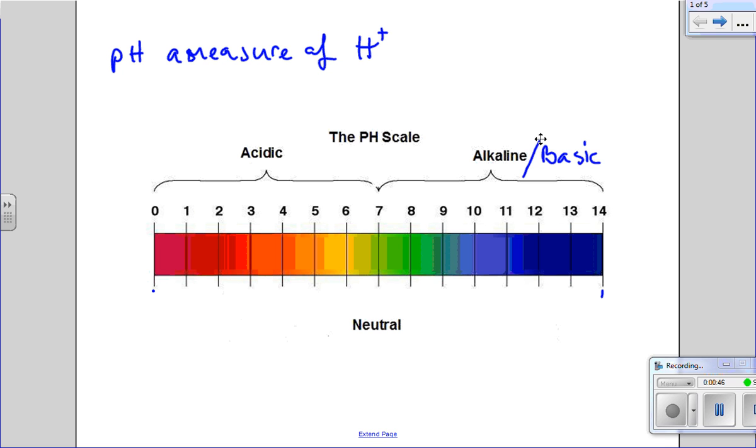Now, pH of less than 7 is what we call acidic. A pH, you can see though, that's pretty much everything under here, of greater than 7 is alkaline. And if your pH equals 7, you are neutral. That's you right here.